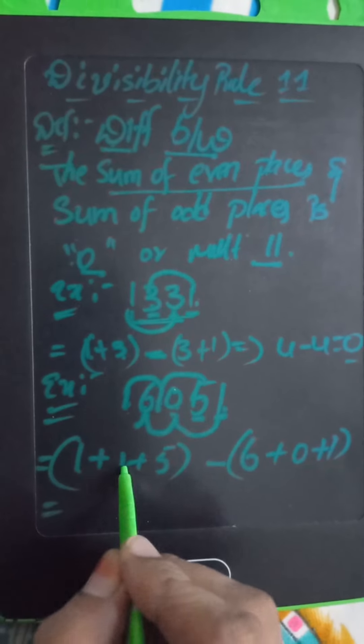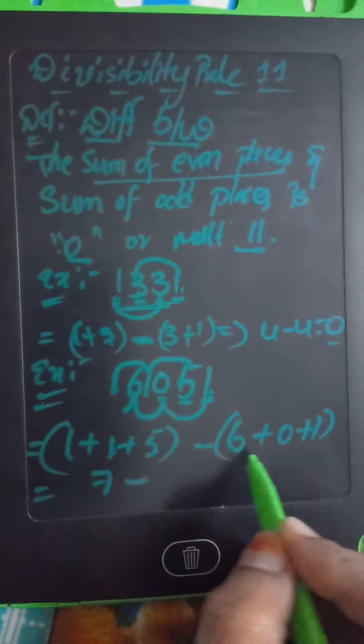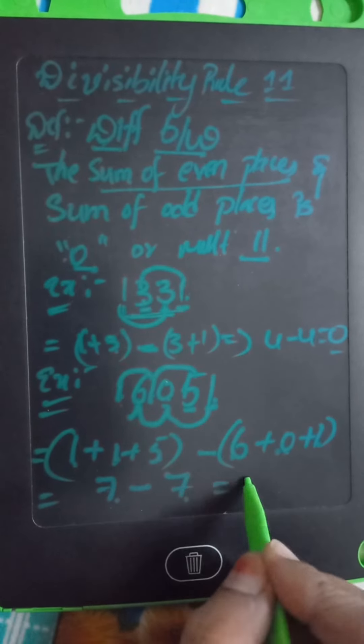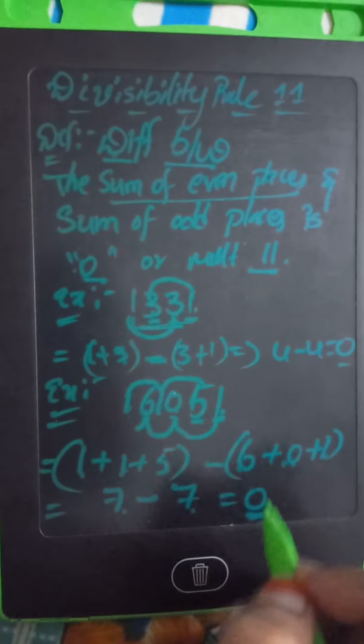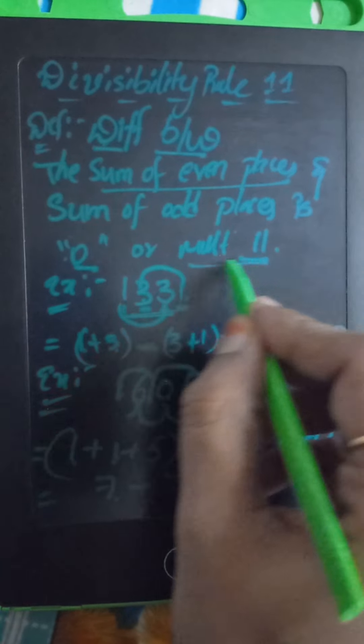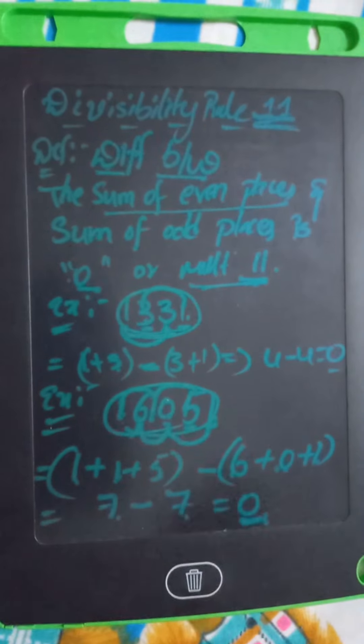So 1 plus 1 plus 5 - 1 plus 1 is 2, 2 plus 5 is 7. Minus 6 plus 0 is 6, 6 plus 1 is 7. 7 minus 7 equals 0. So the result is 0 or multiple of 11, which means the entire number is divisible by 11. Thank you.